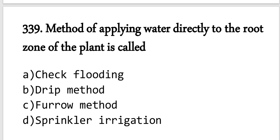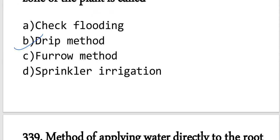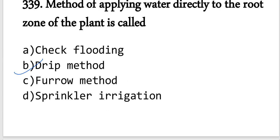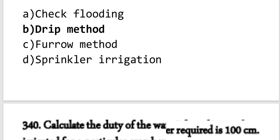Question number 339: The method of applying water directly to the root zone is drip irrigation. Drip irrigation directly delivers water to the root zone, making it the correct answer. Other irrigation methods include flooding, furrow, and sprinkler irrigation.